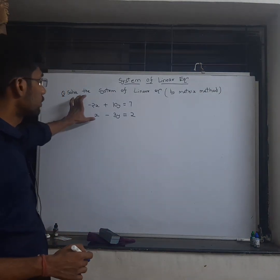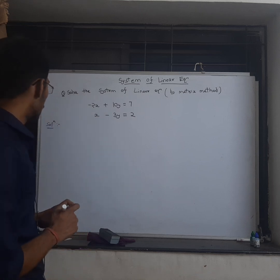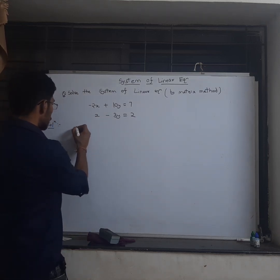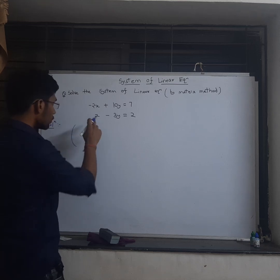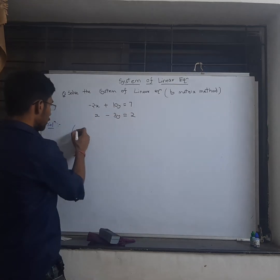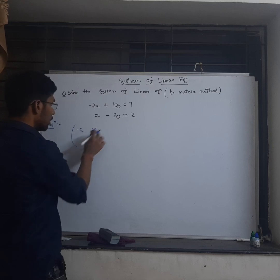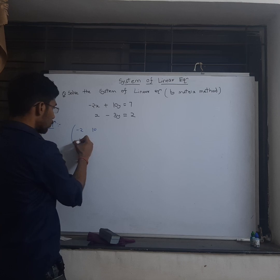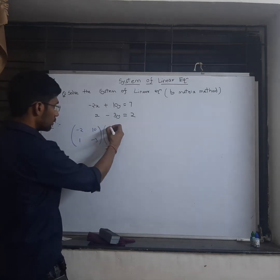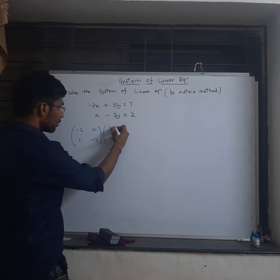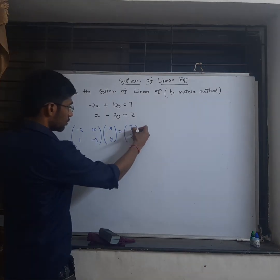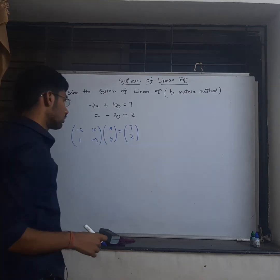So this is my two linear equations. Let me first write in the matrix form. Taking the coefficient of the first equation minus 2, 10 and the coefficient of the variable of second equation 1, minus 3, and I have the variable matrix x, y equals to 7, 2. This is the column matrix.